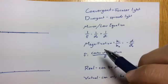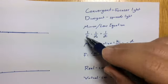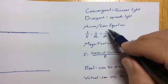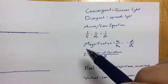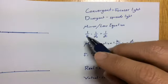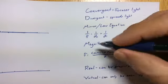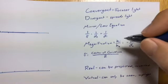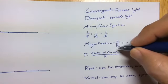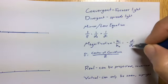We have the mirror or lens equation: one over the focal point equals one over the distance of the object plus one over the distance of the image. All values are distance measurements, and units cancel as long as they're consistent. Magnification describes how big or small something is compared to its original — it's the ratio of the height of the image to the height of the object, also equal to negative distance of the image divided by distance of the object.